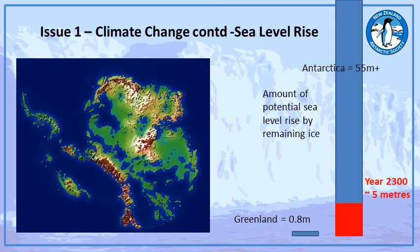The UN also predicts that by 2050 there are likely to be 1.2 billion climate refugees in the world. You can already see climate refugees in the river deltas of Bangladesh, India and Pakistan. In New Zealand itself we already have climate refugees, particularly on the east coast of the North Island and in Auckland, as a result of weather events like Cyclone Gabrielle. This is a concern when you factor in both sea level rise and extra changes in weather patterns.